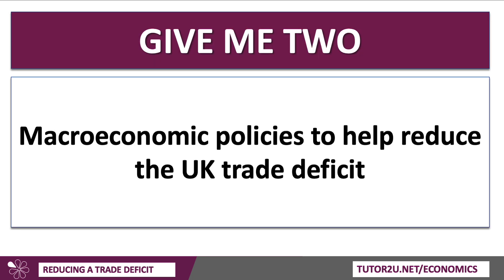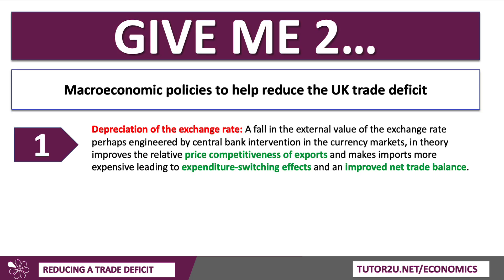Now for macro policies — synoptic brings together micro and macro aspects of the economics you've studied. One policy might be to try to engineer a fall in the external value of the exchange rate: a depreciation of the pound against the euro or the dollar. The UK has a free floating exchange rate, so that would require a change of policy, perhaps moving to a managed floating exchange rate system where the Bank of England intervenes in the currency markets, or perhaps uses interest rates to nudge the exchange rate a little lower. In theory, this improves the price competitiveness of our export sectors. It also makes imports relatively more expensive, leading to expenditure switching effects and hopefully over time an improved trade balance.